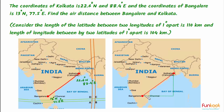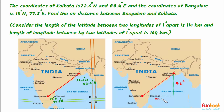For these two points, the difference between the latitudes will give us the vertical distance: 22.6 degrees minus 13 degrees equals 9.6 degrees. And the difference between the longitudes will give us the horizontal distance: 88.4 degrees minus 77.5 degrees equals 10.9 degrees.